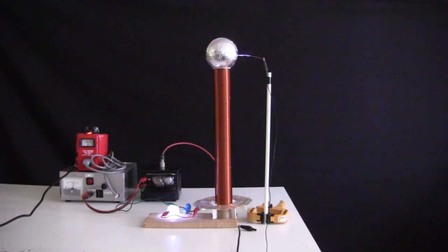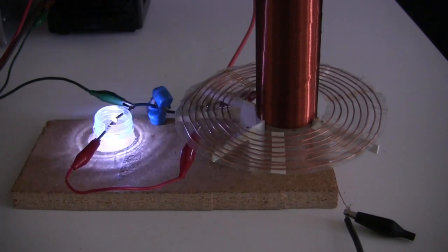Hi folks! Here's my small spark gap Tesla coil, but with a spiral primary coil.